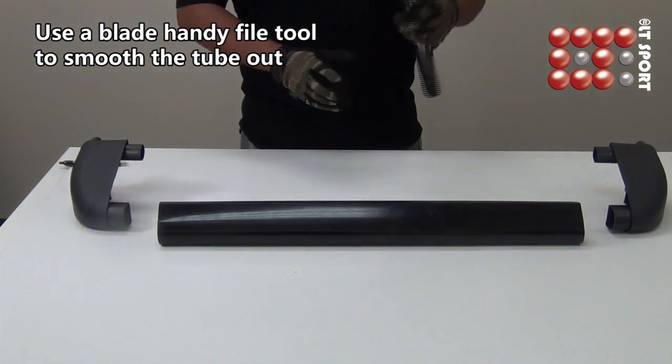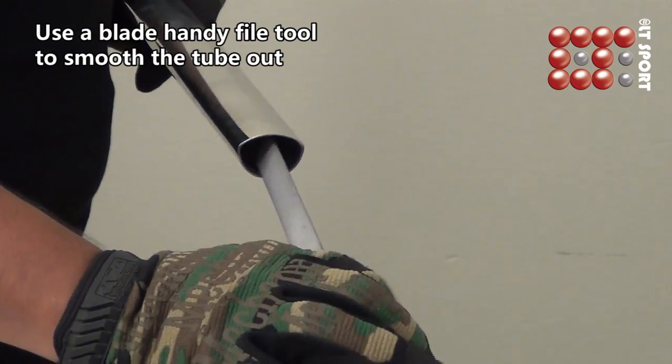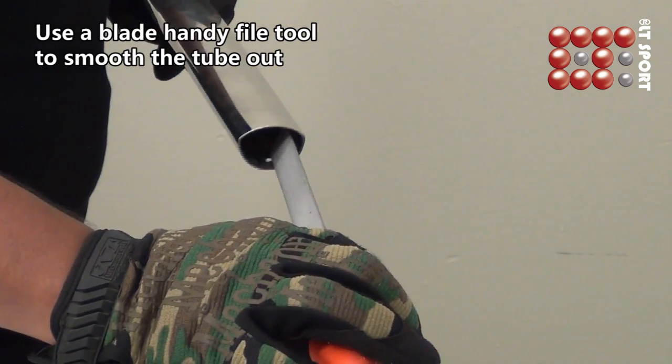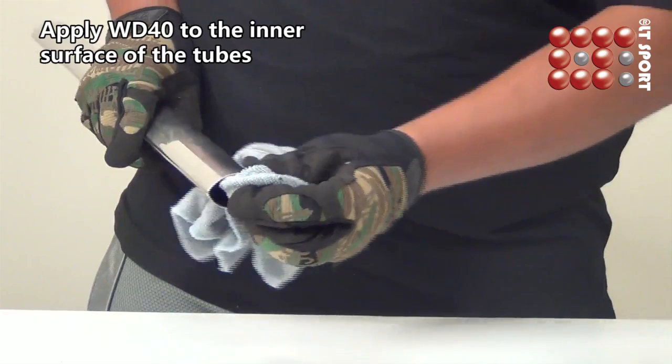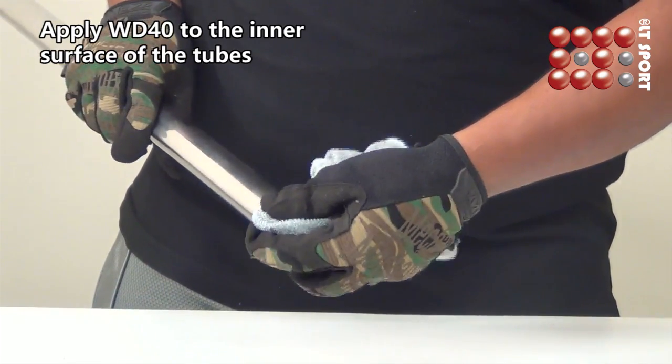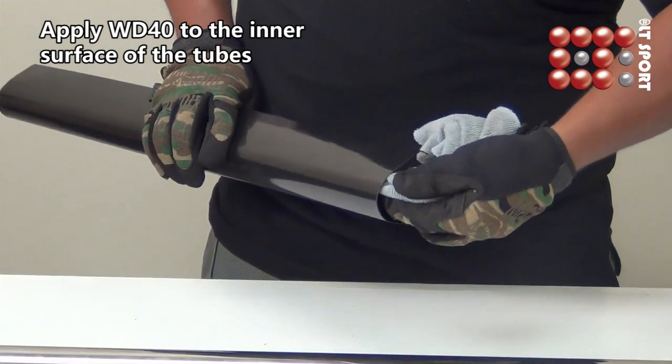Inspect all the parts, especially the edge of the silver tubes and the midsection tubes. If there is a burr, simply use a blade handy file to smooth it out. Use a paper towel or rag, spray some WD-40 on it, then apply it to the inner surface of the tubes. After all the preparations, the assembly will be easier.